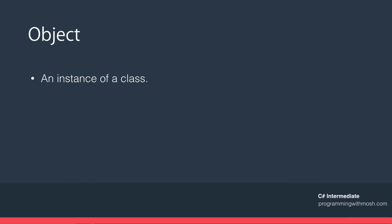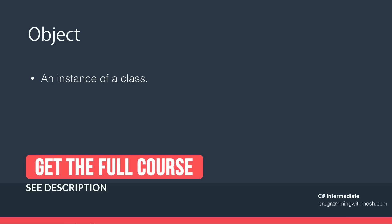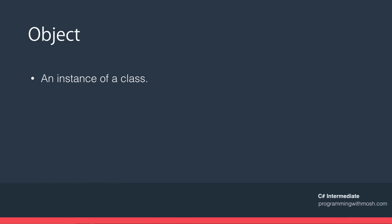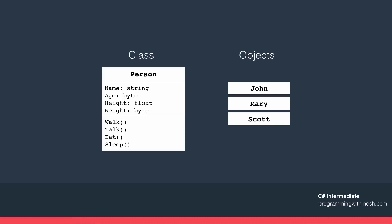A term often used with classes, sometimes interchangeably, is 'object' — but an object is fundamentally different from a class. An object is essentially an instance of a class that resides in memory. So if Person is a class, we can have objects like John, Mary, and Scott — these are instances of that Person class. The Person class defines the blueprint from which we create objects at runtime, and these objects talk to each other to produce the application's behavior.